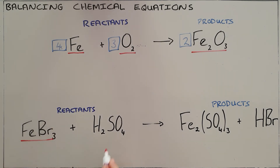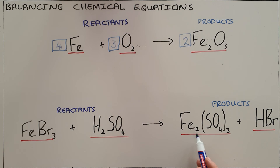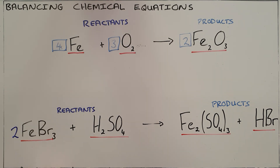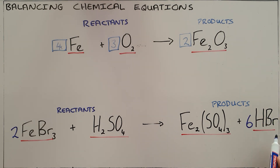Keep in mind that you may not change the formula of an individual compound. We start by seeing that in our reactants we only have 1 iron atom, and in the products we have 2 iron atoms, so we balance that by placing a 2 in front of this compound. We now have 2 iron atoms and also 2 times 3 is 6 bromine atoms. In our reactants we only have 1 bromine atom in the product, so we balance that by placing a 6 in front of hydrogen bromide.